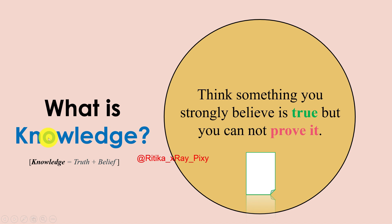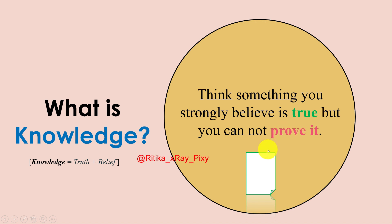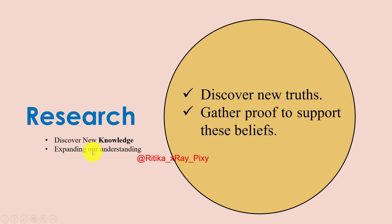Since we are trying to expand the limits of human knowledge, the next question is: what is knowledge? Think about something you strongly believe is true but cannot prove. For example, consider God's existence — you can believe it but cannot prove it either way. Knowledge is the combination of truth and belief. In research, we discover new knowledge and new truths, and we gather proof to support those truths.